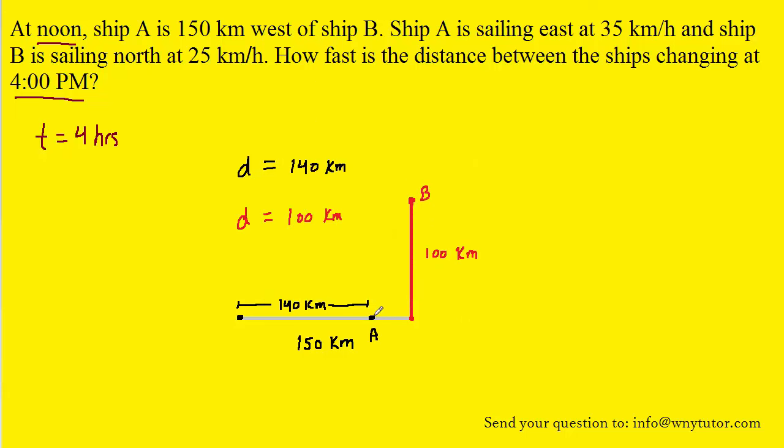So here we have ship A, which again has traveled 140 kilometers to the east, and then ship B is 100 kilometers to the north right here. Of course, we can find the distance from ship A to where ship B originally was located by noting that the distance from here to here is 150 kilometers, and the 140 kilometers marked would obviously show that that distance right here is 10 kilometers. So we can label that.